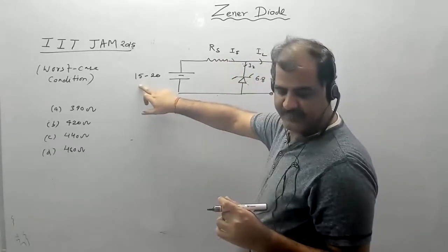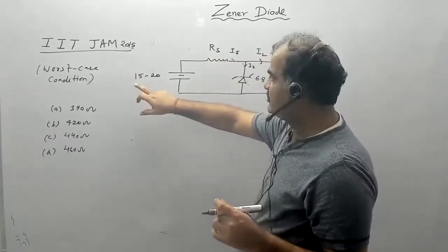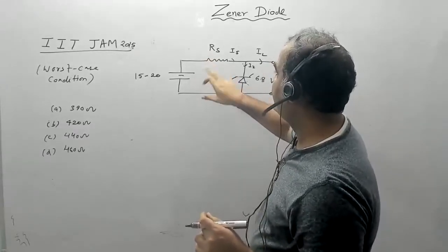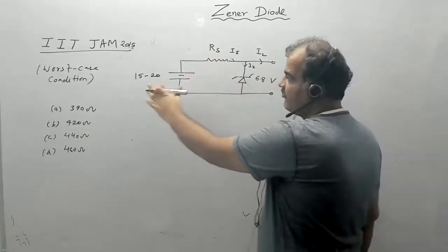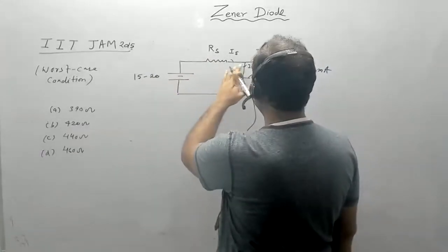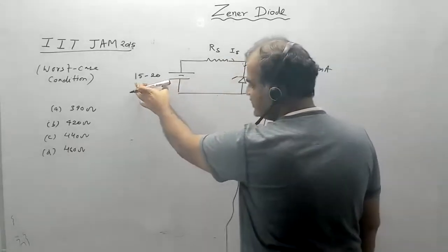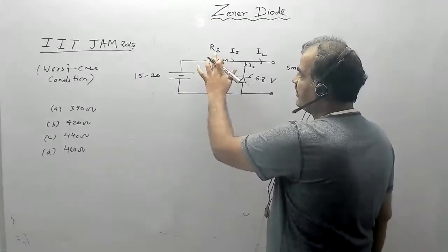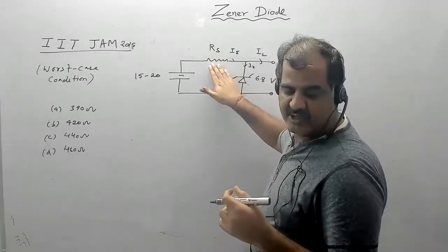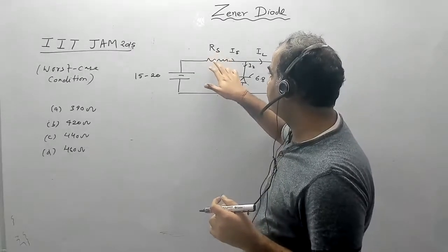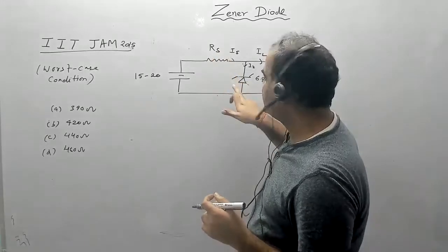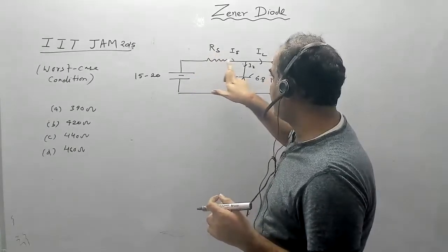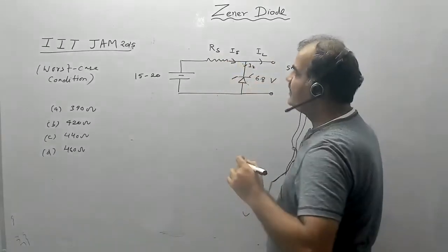For V minimum, which is 15V here, there is a fixed value of current for a given resistance which is limiting the current. We have to calculate the series resistance Rs such that for V minimum it keeps the diode conducting in the breakdown region for all given conditions — 15 to 20 volts and 5 to 20 milliampere load current. The Rs value should be less than a maximum value, otherwise the condition will not be satisfied.